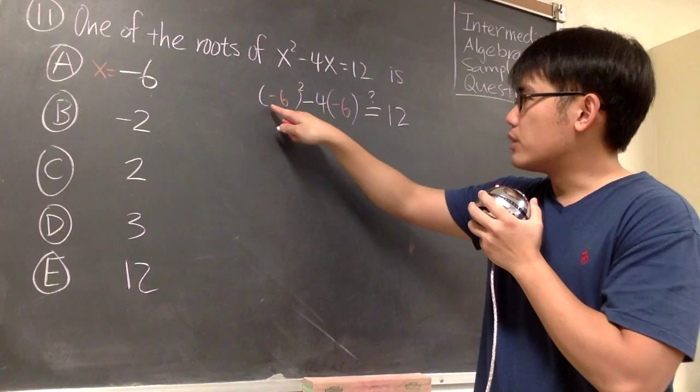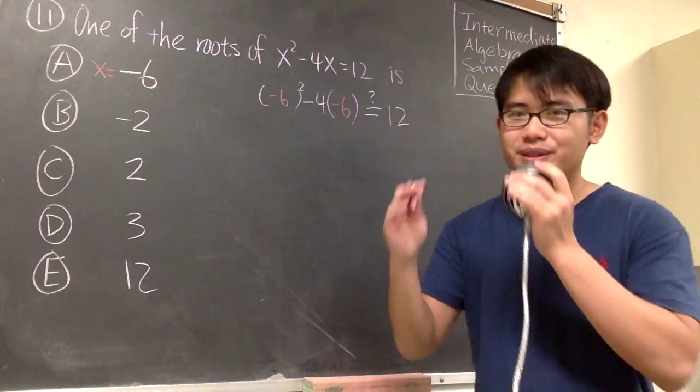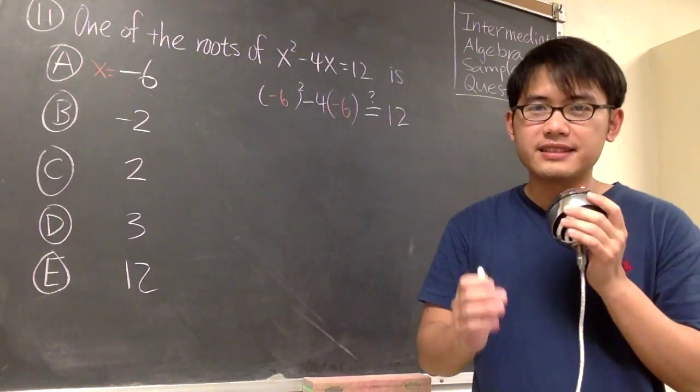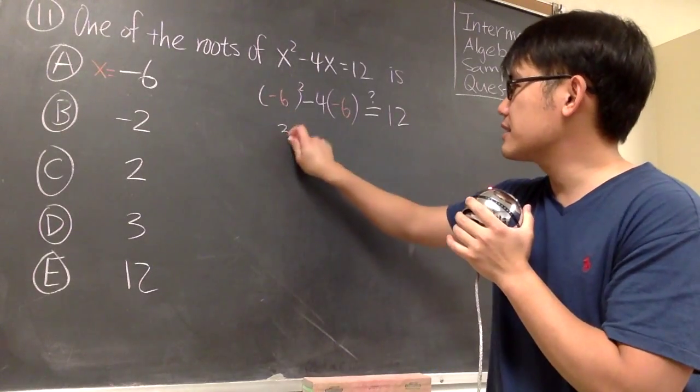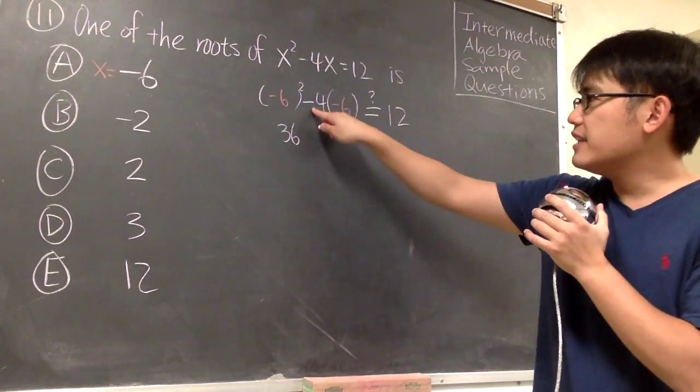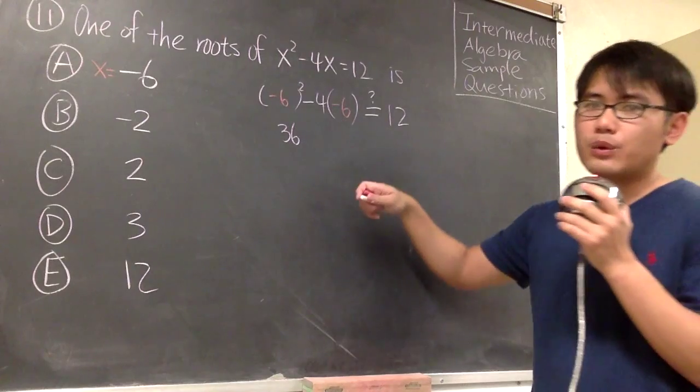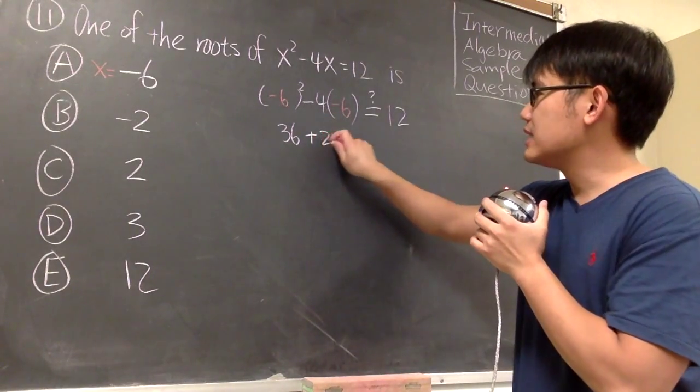So work out the power. Negative 6 to the second power means we have to do negative 6 times negative 6, we have positive 36. And then negative 4 times negative 6, that will end up with positive 24.